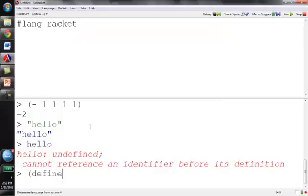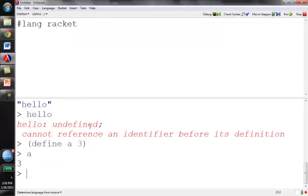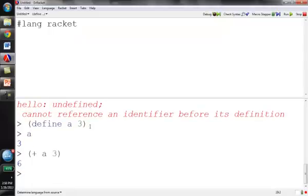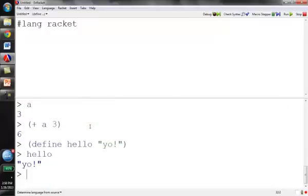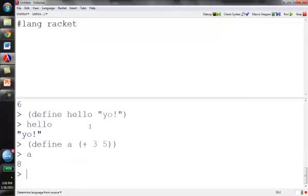We can define new things, like I can set a to be 3, and now when I type a, it'll be 3. I can say plus a and 3, and that'll give me 6. And I can define other things, like I could define hello to be yo. And now, instead of getting an error message when I type hello, I get the string yo. I can also have more interesting values that I'm setting things to. So I set a to be the expression plus 3 and 5. It evaluates that and sets a to be 8.